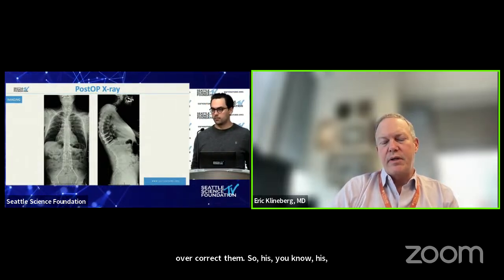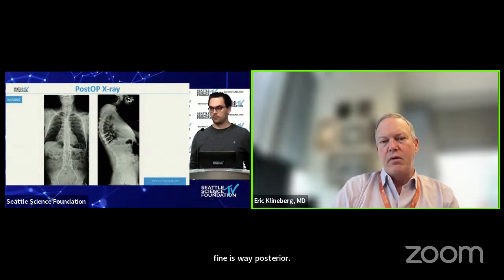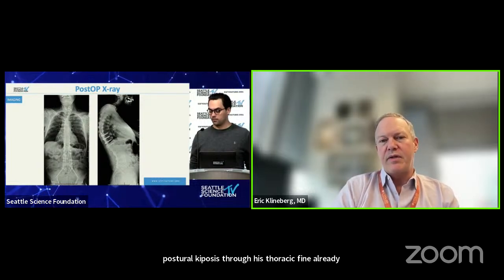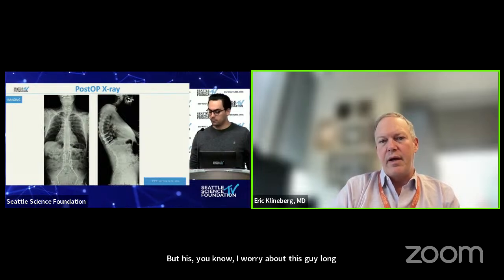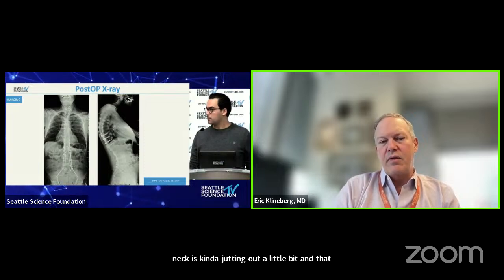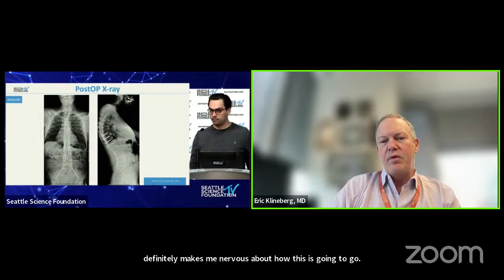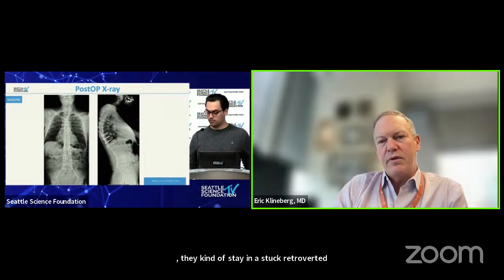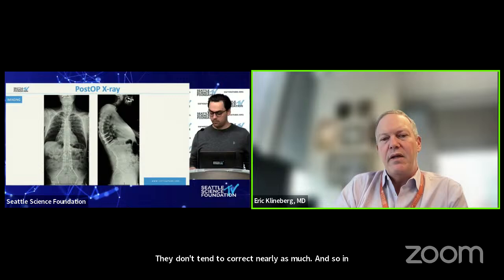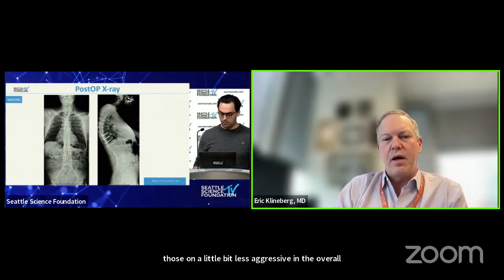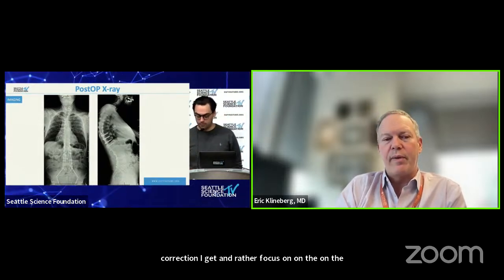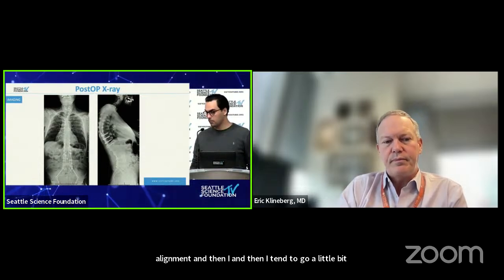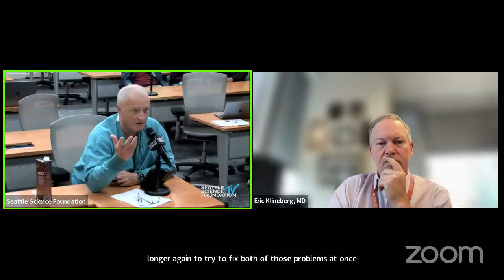He probably did overcorrect — the thoracic spine is way posterior and his neck is jutting out, which makes me nervous long-term. Older patients with a retroverted pelvis for a long time tend to stay stuck in that retroverted posture and don't correct nearly as much — so in those patients I'm a little less aggressive with overall correction and rather focus on alignment, going a little longer to address both problems. Quick question: when patients present with DISH and bridging syndesmophytes on AP and CT — does that help prevent adjacent segment failures? Can you land there and save levels?